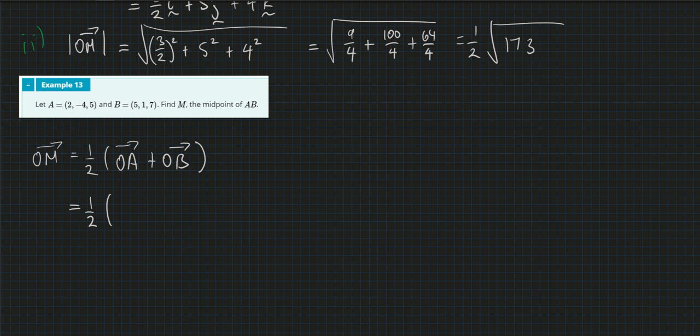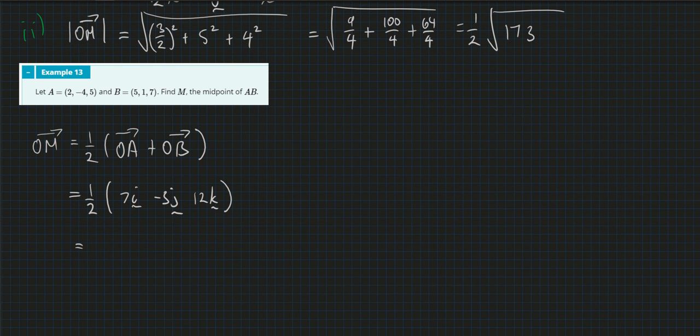So O to A is 2i minus 4j plus 5k. The i's here is 2 plus 5, so that's 7i, and we get 7 on 2i minus 3 on 2j plus 4k. Therefore M is equal to 7 on 2, minus 3 on 2, 4. That gives you the point, because that's the definition of O to M. Well done, I'm on to the next part of the exercise.